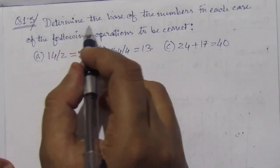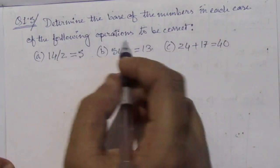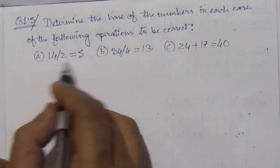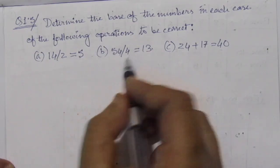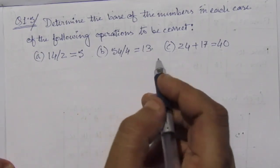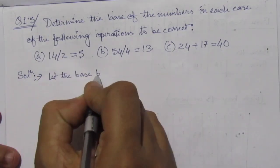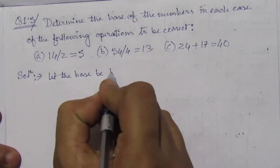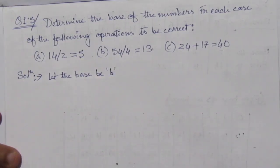The problem is: determine the base of the numbers in each case of the following operations to be correct. For this operation to be correct, what will be the base of these numbers? Let the base be small b.